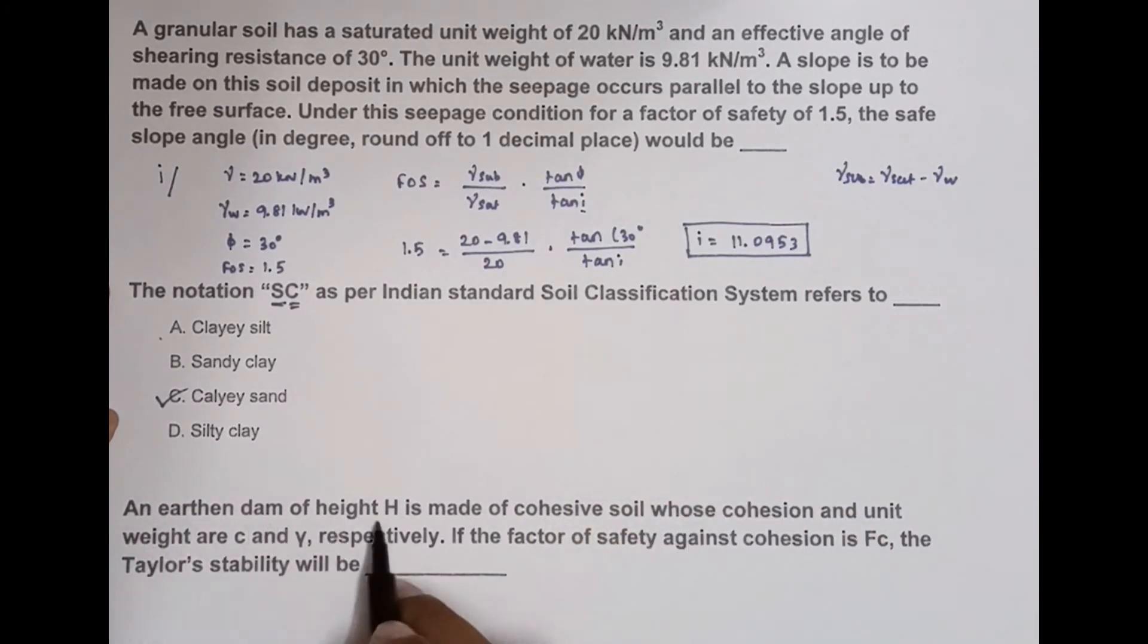Next one: An earthen dam of height h is made of cohesive soil whose cohesion and unit weight are c and γ respectively. They are giving cohesion c = c and unit weight = γ. If the factor of safety against cohesion is Fc, the Taylor stability...